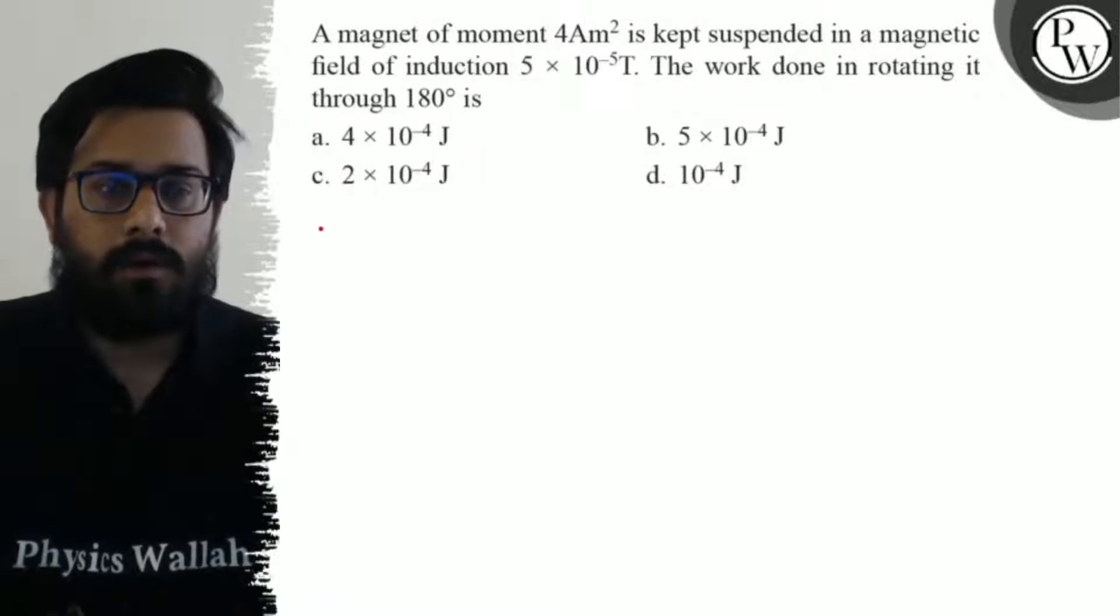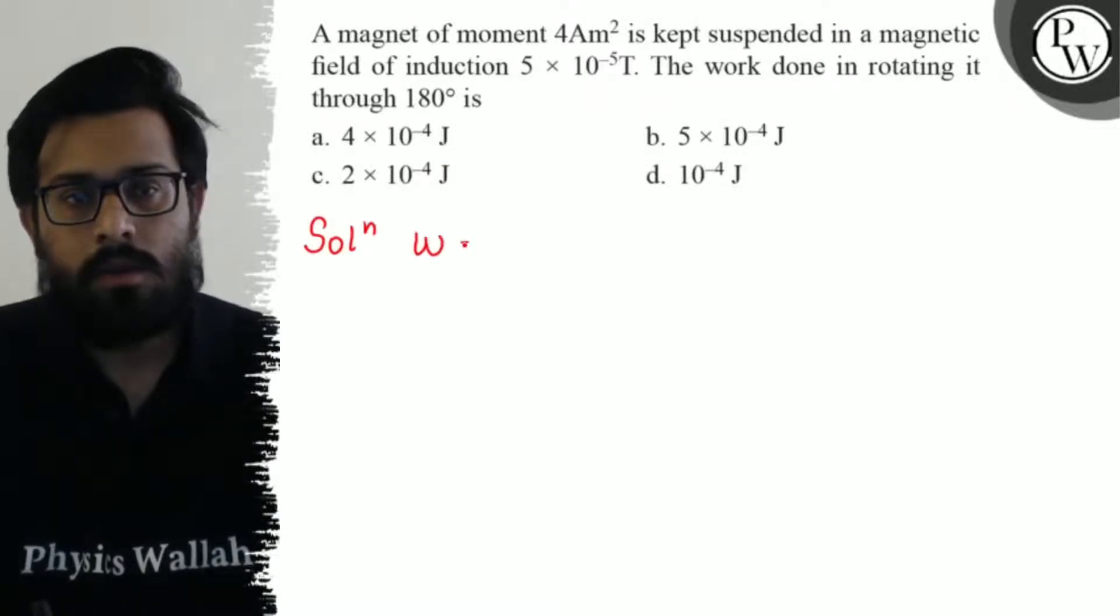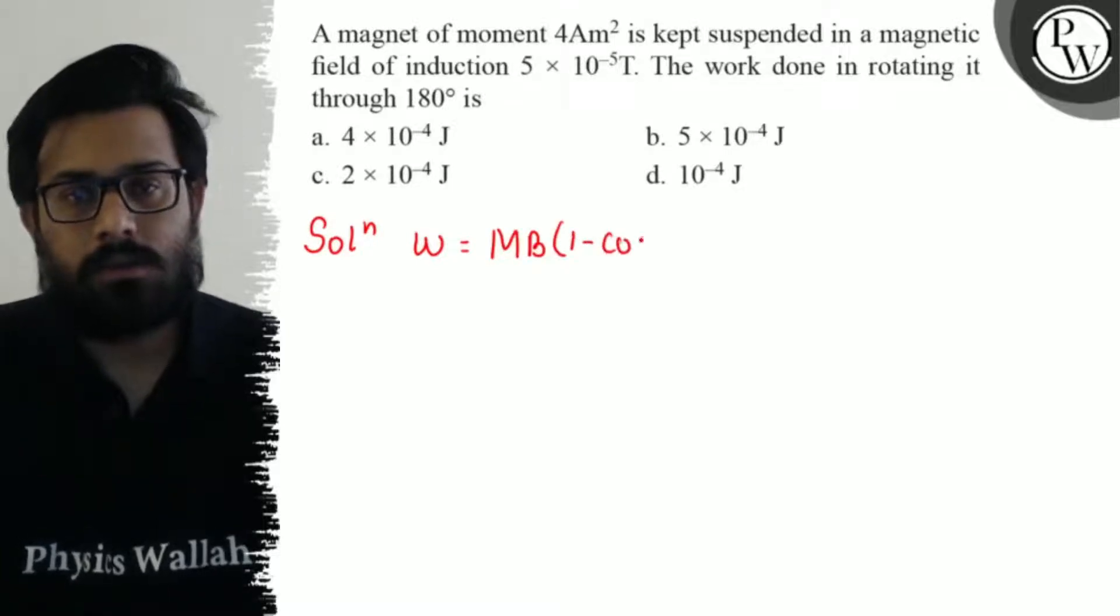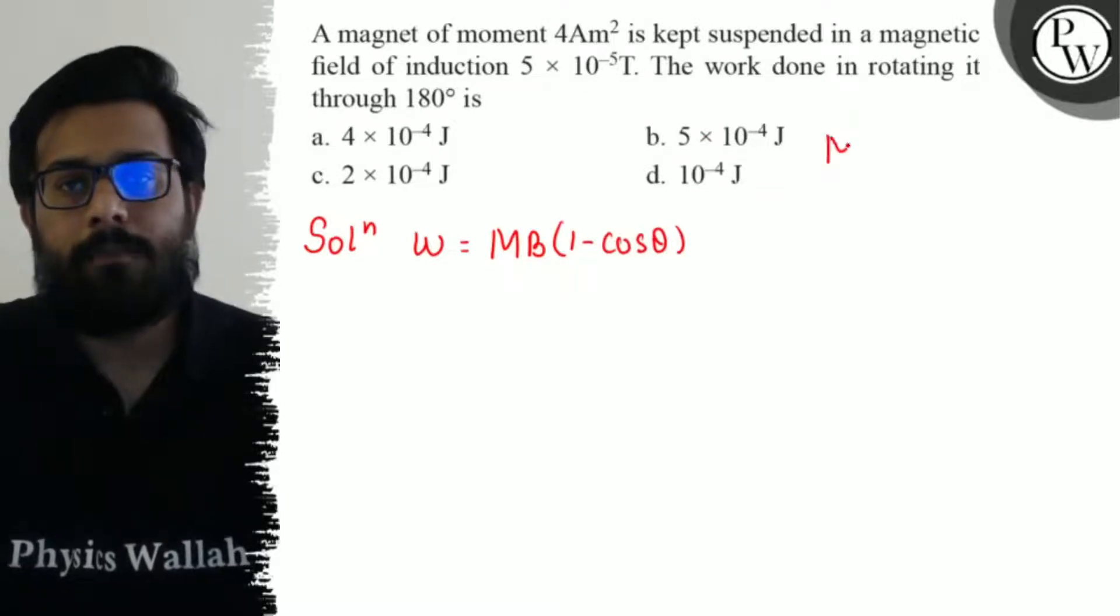Work done can be calculated by using the formula W = MB(1 - cos θ). The magnetic moment M value is 4 ampere meter square.